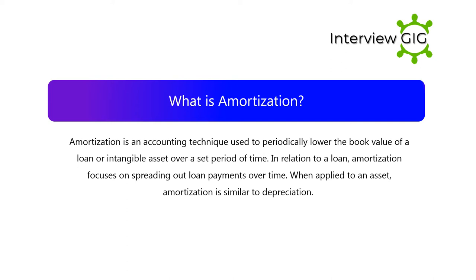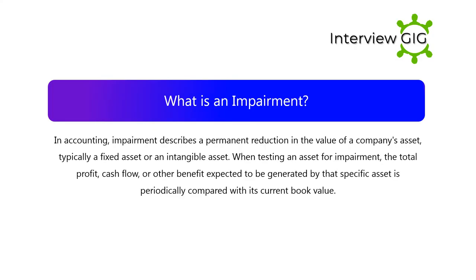What is amortization? Amortization is an accounting technique used to periodically lower the book value of a loan or intangible asset over a set period of time. In relation to a loan, amortization focuses on spreading out loan payments over time. When applied to an asset, amortization is similar to depreciation.